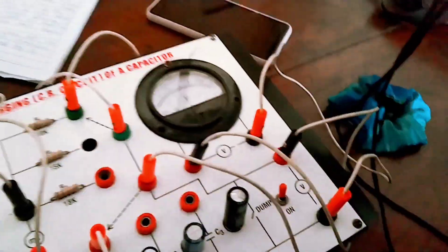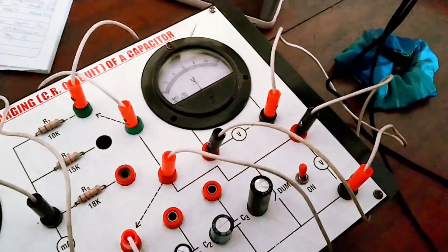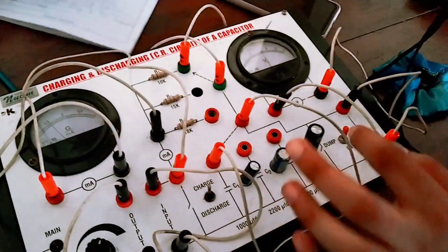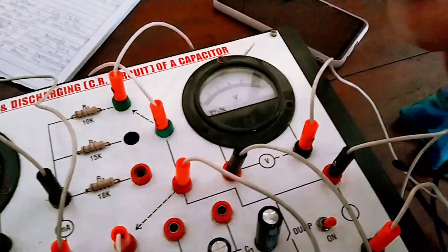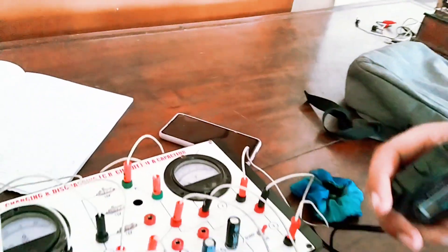Now you have to take the observation till 10 volts - just like 1 volt, 2 volt, 3 volt, 4 volt, 5 volt and 7 volt. Then you have to plot the graph and reading.